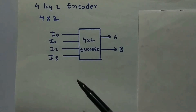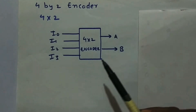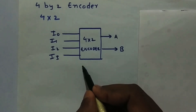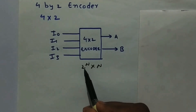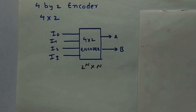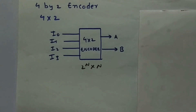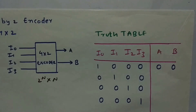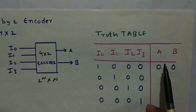Now let's discuss a 4×2 encoder. This is how it looks — we have 4 inputs and 2 outputs, following 2^n × n. Remember that only one of the inputs can be high at a time. I'm going to explain this using the truth table.